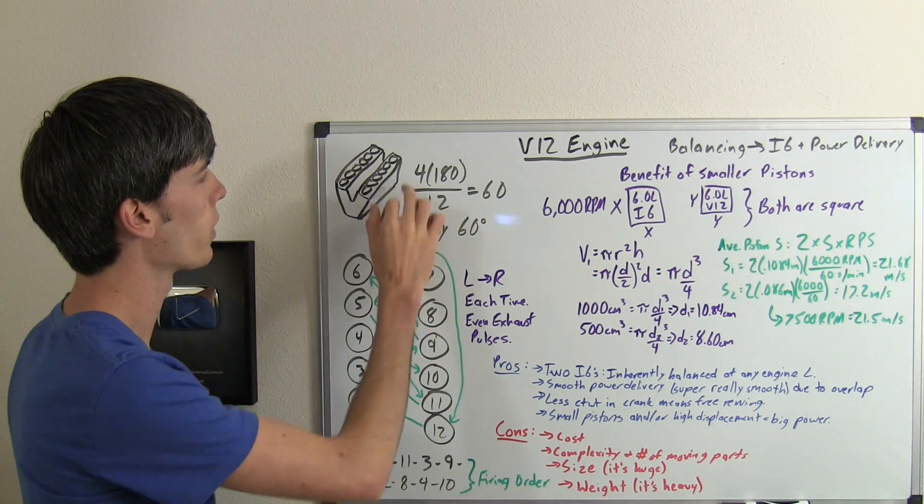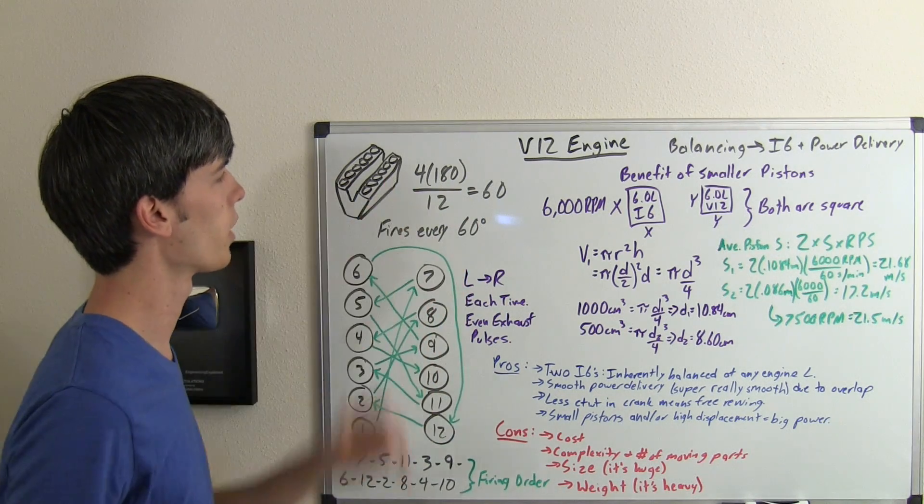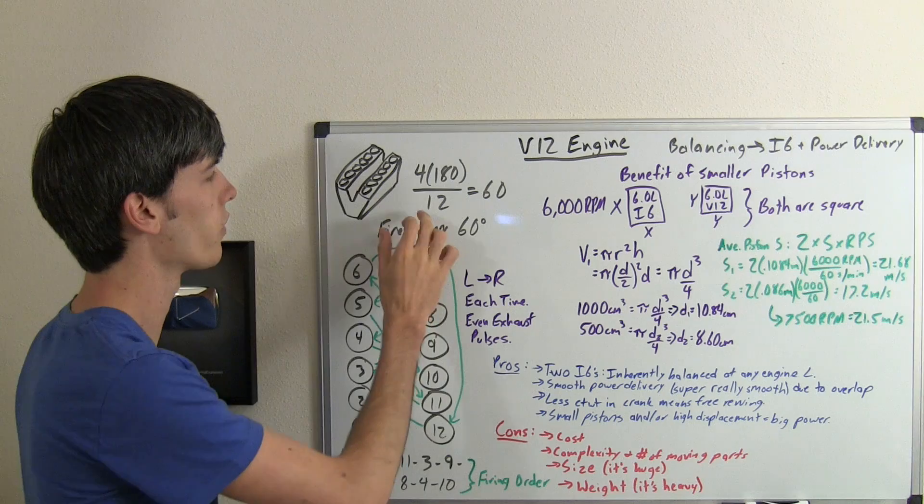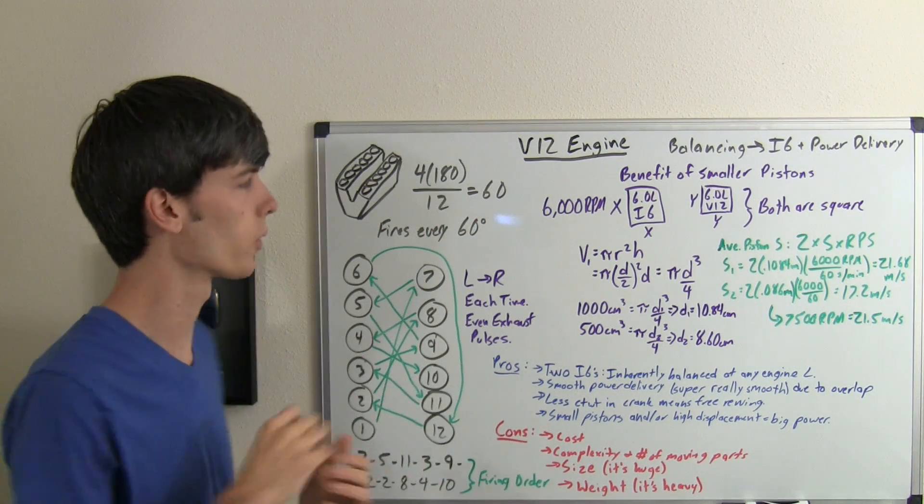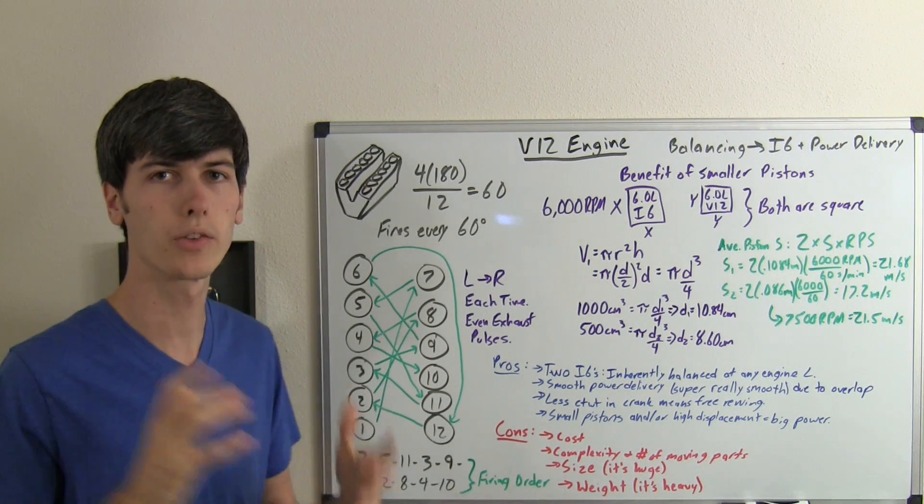Now calculating that, we have 4 times, that's the number of strokes, times 180 degrees divided by the number of cylinders. That gives us a fire every 60 degrees of the crankshaft rotation. So very smooth power delivery.